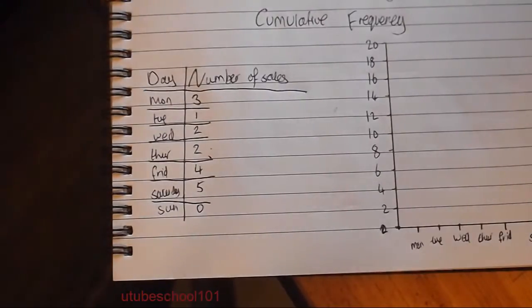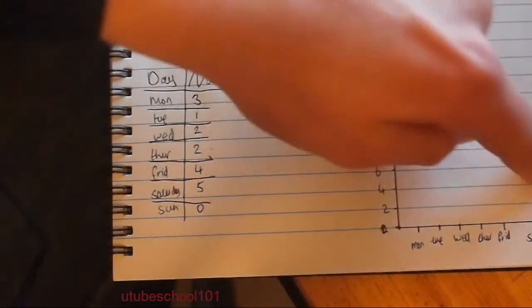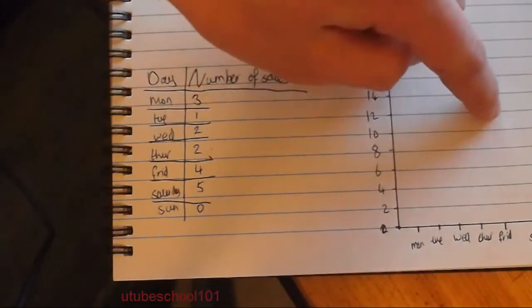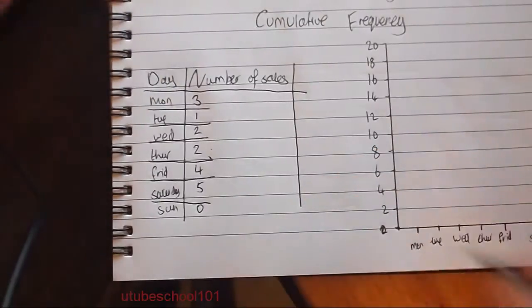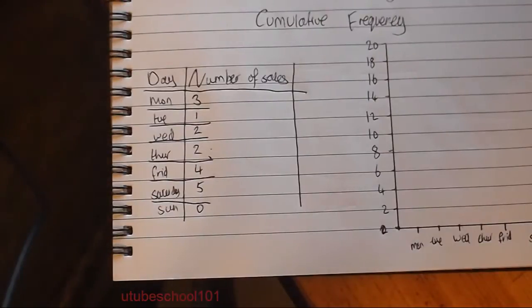So instead of just having different sales — so the sales might go all over the place — Cumulative Frequency will add the sales on top. The sales in real life can never go down because you can't really have a minus sale.